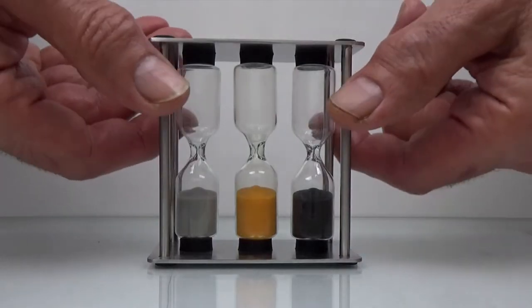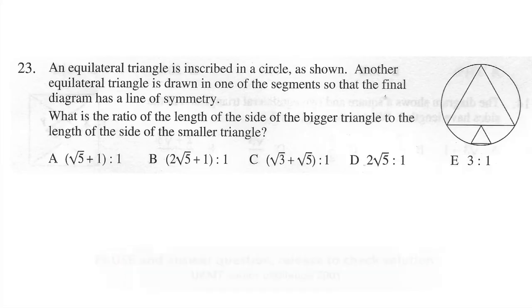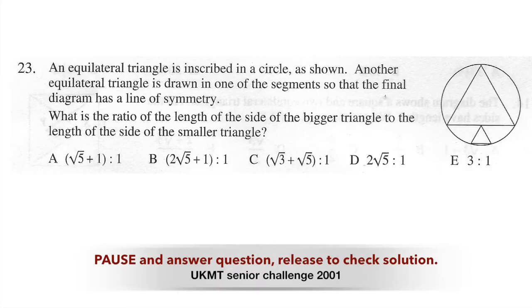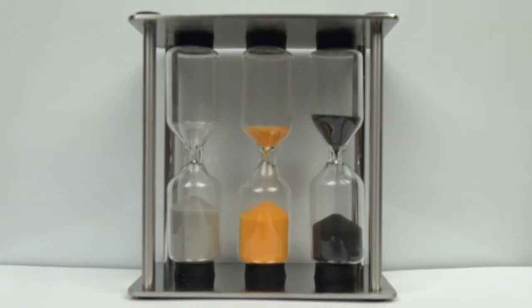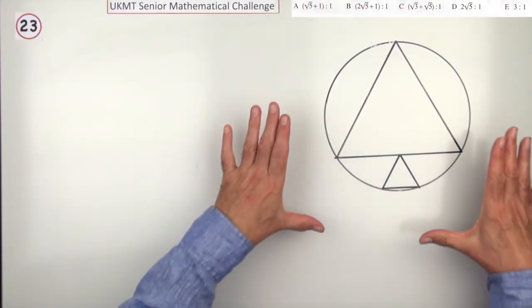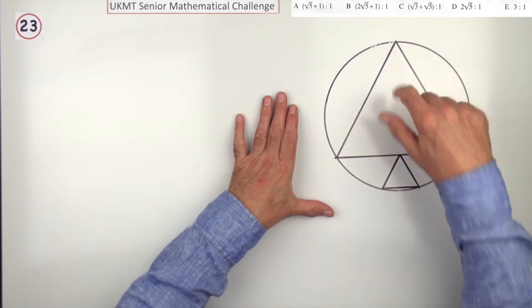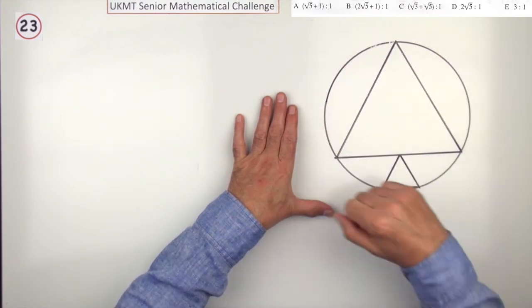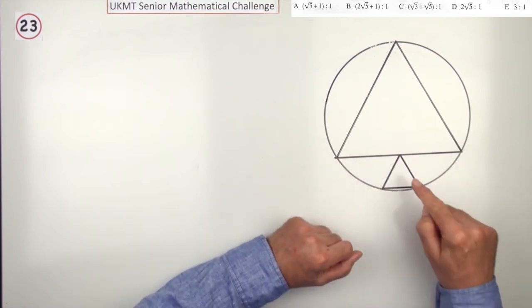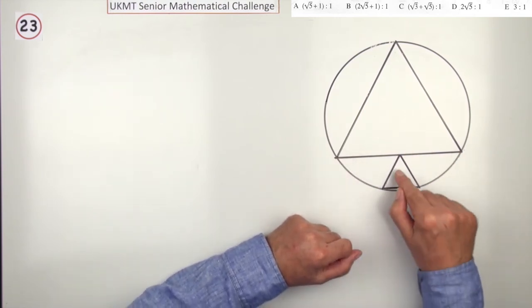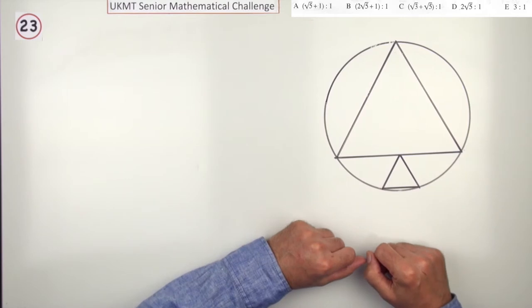Ready, and go! In this one, you've got the largest equilateral triangle drawn inside a circle, and in the space that's left of this segment here, you've again got the largest equilateral triangle that will fit into there.